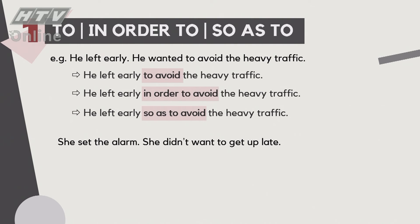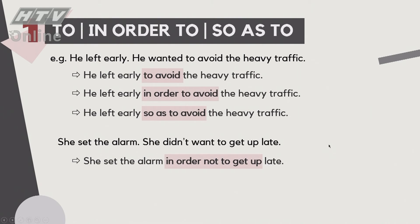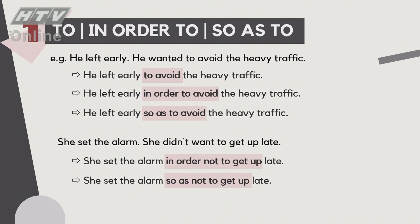Ví dụ thứ hai: 'She set the alarm. She didn't want to get up late.' Mục đích của việc đặt đồng hồ là đừng dậy trễ. Chúng ta viết: 'She set the alarm in order not to get up late', hoặc 'so as not to get up late.' Chữ 'not' đi trước 'to do something'. Không viết 'She set the alarm not to get up late' - chỉ 'in order to' và 'so as to' mới được chấp nhận.